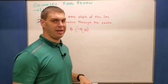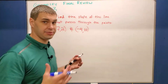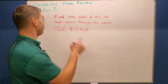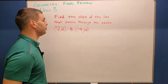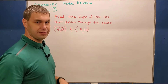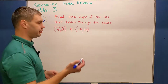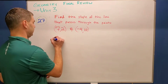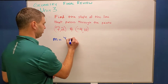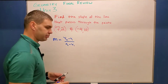I'm going to put the number of the problem from the review packet — if you're not one of my students you can still absolutely do these problems. This first one asks us to find the slope of the line that passes through the two points (7, 2) and (-4, 10). We have two ordered pairs, and what we need to use is the slope formula: m equals y2 minus y1 over x2 minus x1.